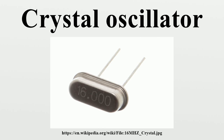The resonant frequency depends on size, shape, elasticity, and the speed of sound in the material. High-frequency crystals are typically cut in the shape of a simple rectangular plate, while low-frequency crystals, such as those used in digital watches, are typically cut in the shape of a tuning fork. When a crystal of quartz is properly cut and mounted, it can be made to distort in an electric field by applying a voltage to an electrode near or on the crystal. This property is known as electrostriction or inverse piezoelectricity.